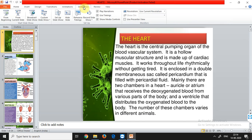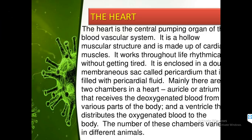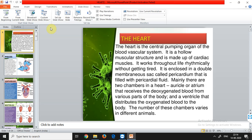The heart is the central pumping organ of the blood vascular system. It is a hollow muscular structure made up of cardiac muscles. There are mainly two types of heart: the muscular or myogenic heart — 'myo' referring to muscle — and the neurogenic heart, which is derived from nervous tissue. The myogenic heart is present in 98% of organisms.